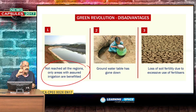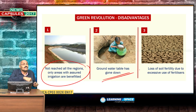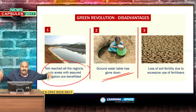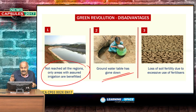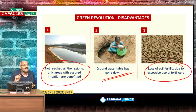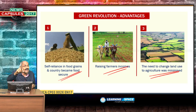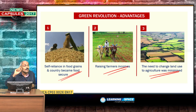Only areas with assured irrigation benefited, and only certain crops benefited. Another drawback is that the groundwater table has gone down due to excessive use of water for irrigation through tube wells, and soil fertility was lost due to excessive use of fertilizers. However, the positive side is that we became self-reliant in food grains. The biggest problem is the green revolution did not touch dry crops.